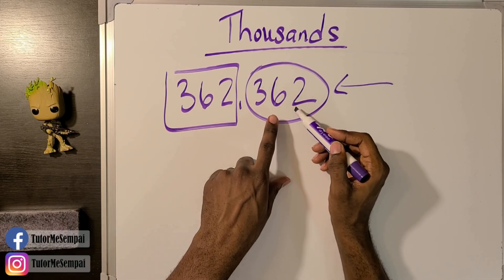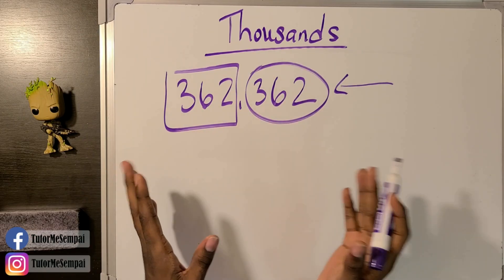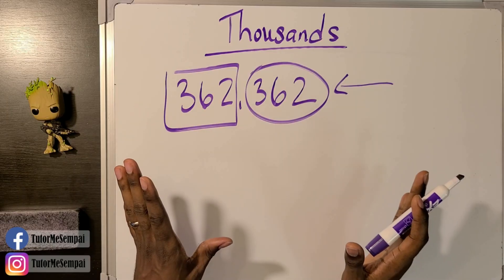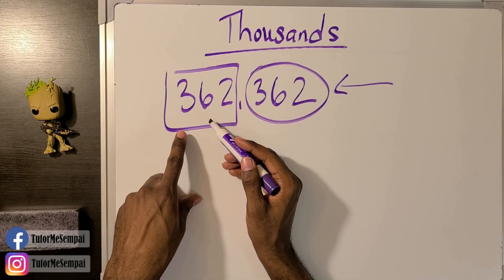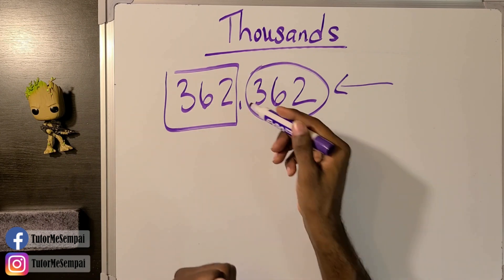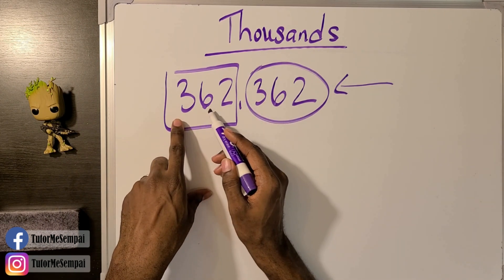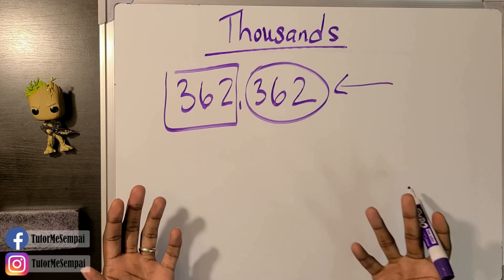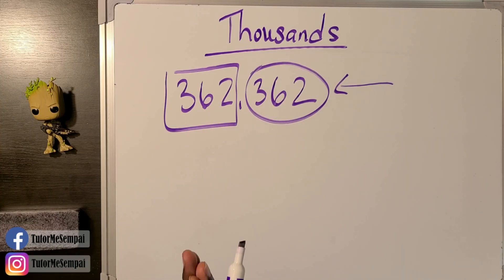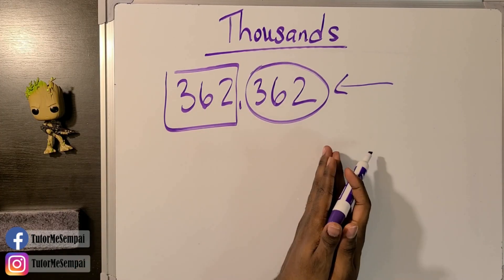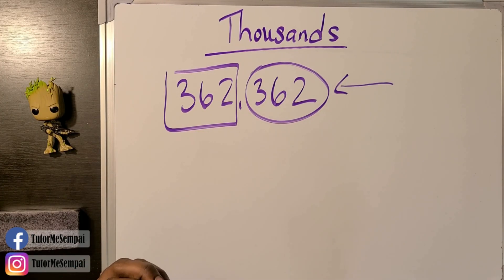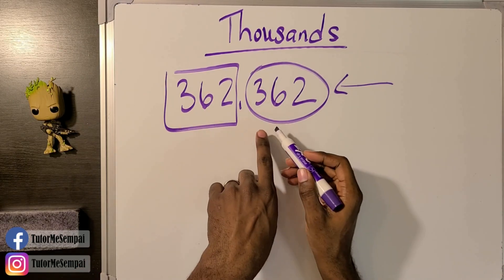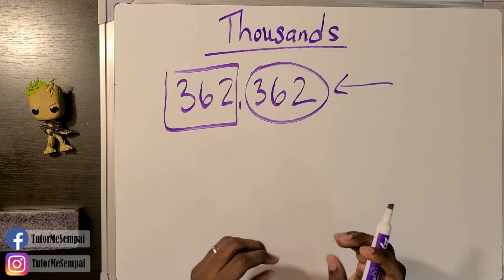Now read the individual groups. The right group reads 362, and the left group also reads 362. Putting everything together with the comma name, you get: 362 thousand, 362. Notice that before and after the comma you're saying the same words — 362 and 362.